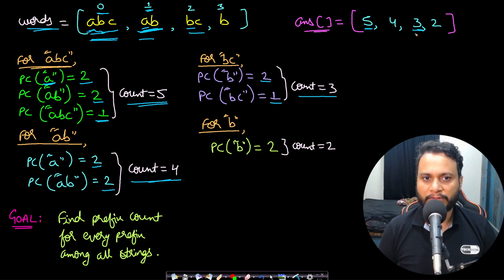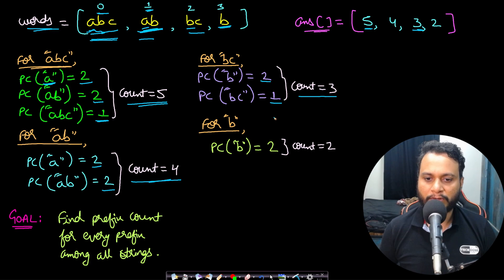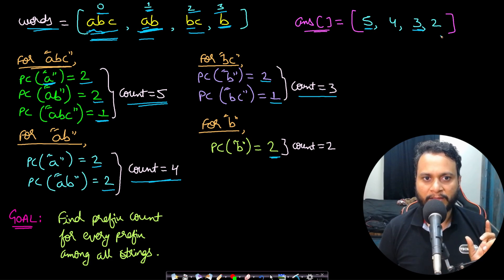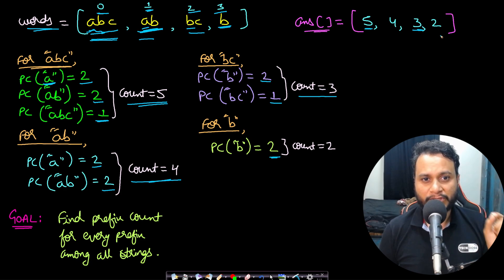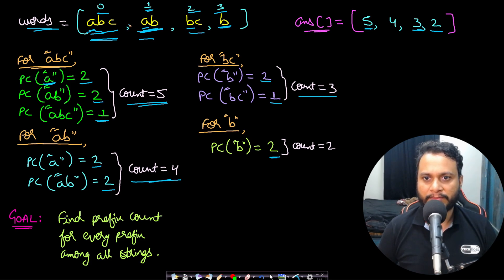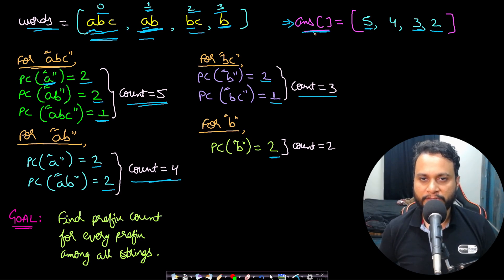For the last string 'b', only two strings start with 'b' — at index 2 and index 3 — so it contributes two to the answer. So we need to return for every word in the array: accounting for all its prefixes, what is the total number of words in which each prefix occurs, summed up and returned in our answer array. Our goal is to find the prefix count for every prefix among all the strings.